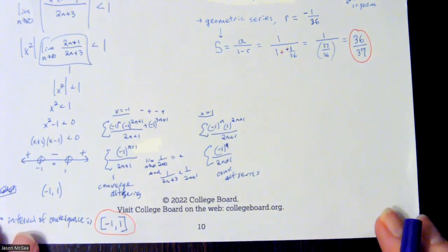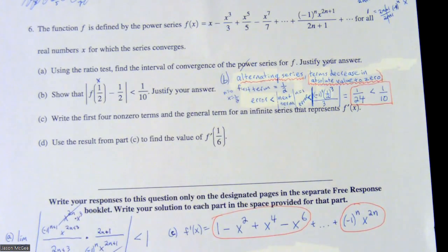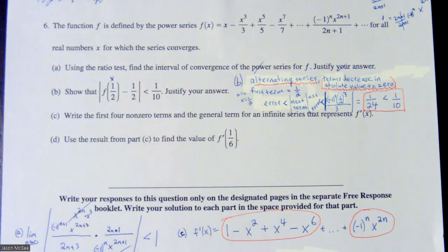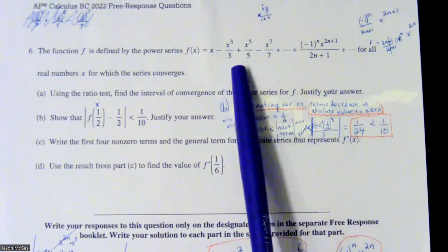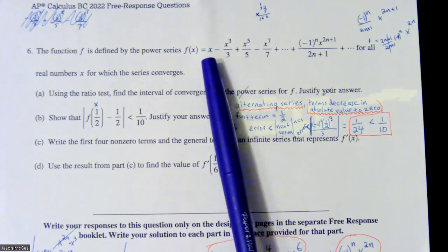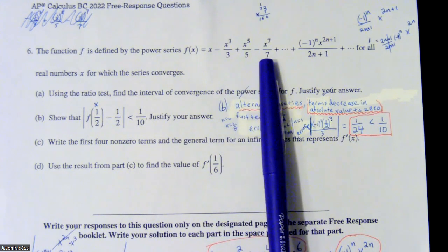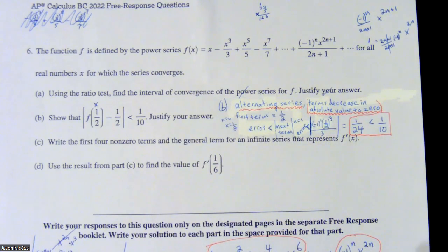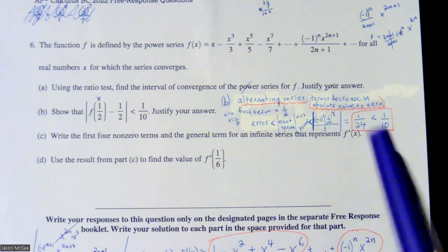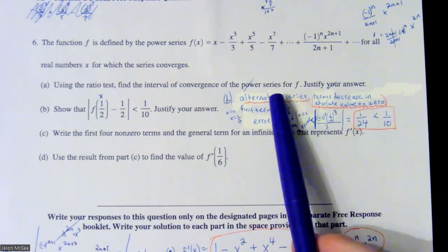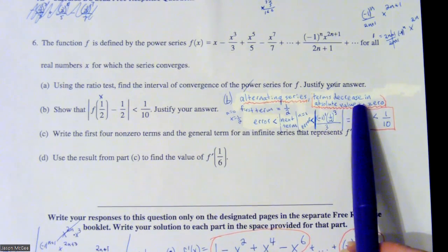For part B, when we see the notation with subtraction inside an absolute value bar less than something, that looks like an error problem — we're looking at the next term in the sequence. It's a little tricky because it doesn't tell us how many terms to use. Here's what I noticed: these terms form an alternating series because the signs are switching and the terms are decreasing in absolute value — zero, one-third, one-fifth, one-seventh. I'll note that down: the alternating series terms decrease and snap to a value of zero.